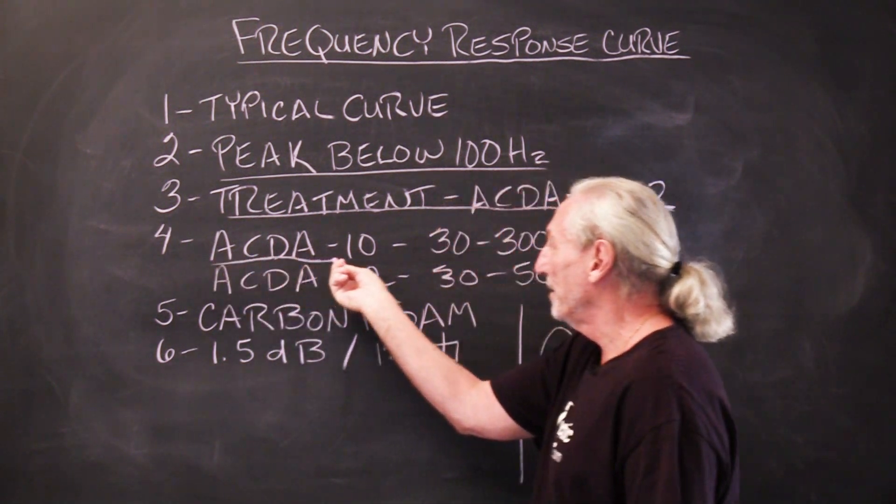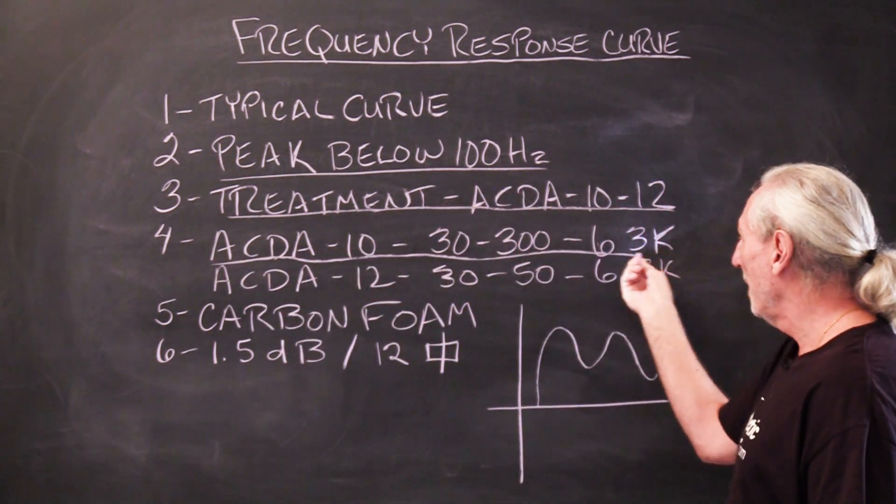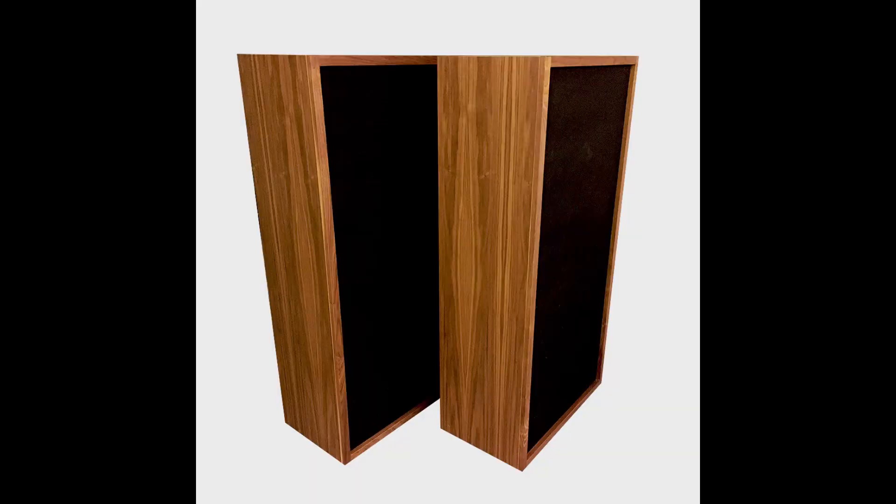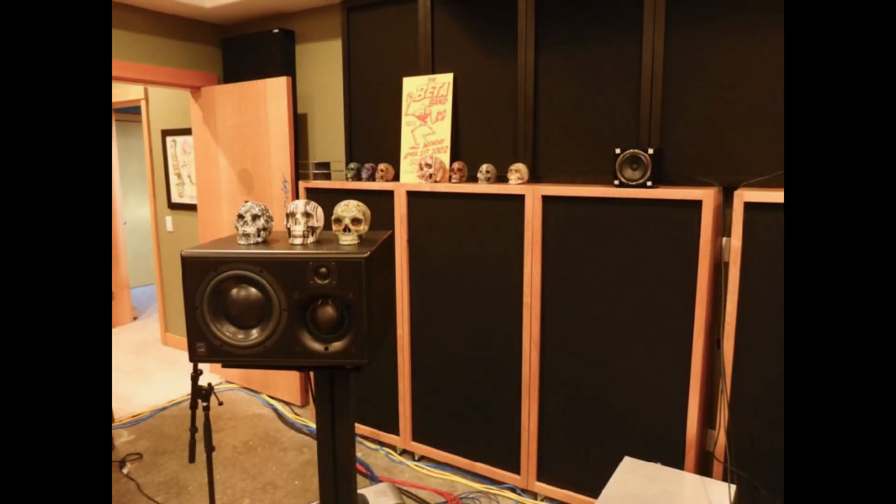The 10 is more broadband, starts at 30, goes to 300 with the carbon inside of it. And then we add our foam on the face behind the fabric, which pushes the absorption up to 6,300.